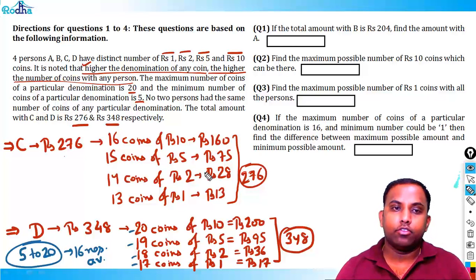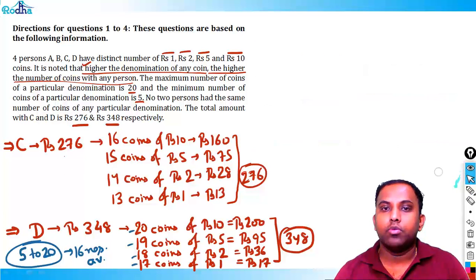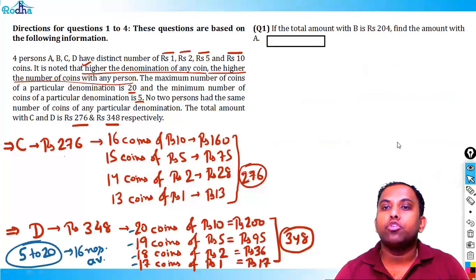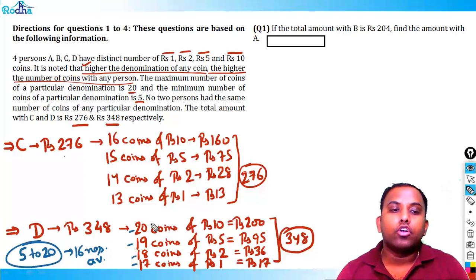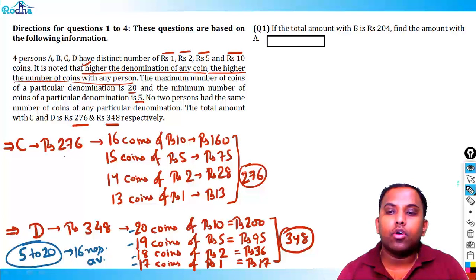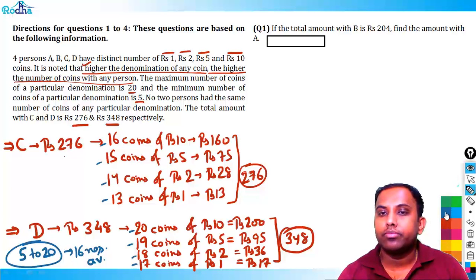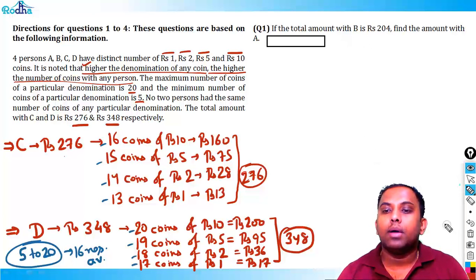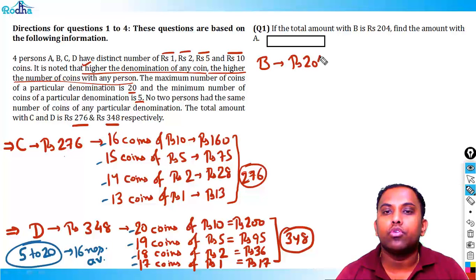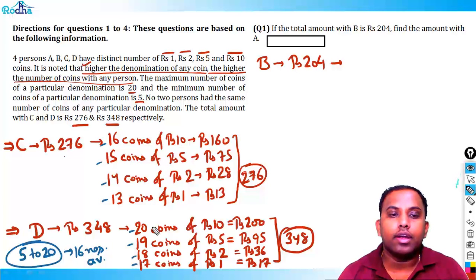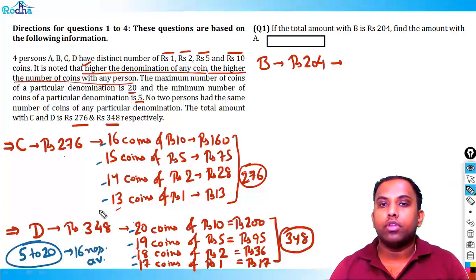Question 1: If the total amount with B is rupees 204, find the amount with A. Out of the 16 numbers (5–20), four numbers are taken by D {20,19,18,17} and four by C {16,15,14,13} — eight numbers occupied so far. Numbers 13 to 20 are taken, so the next available highest is 12. We try B starting from 12.